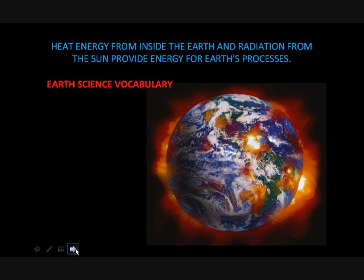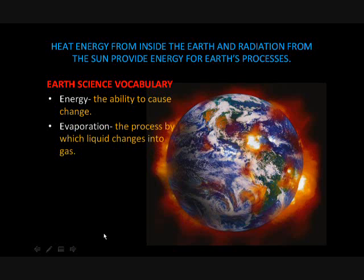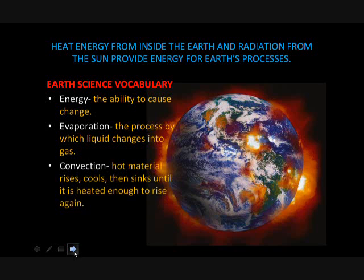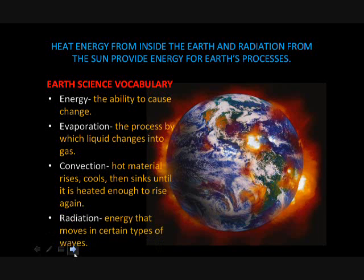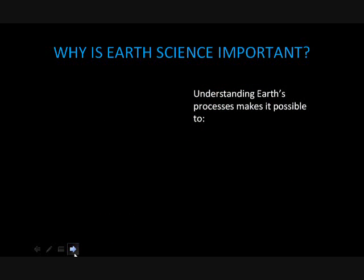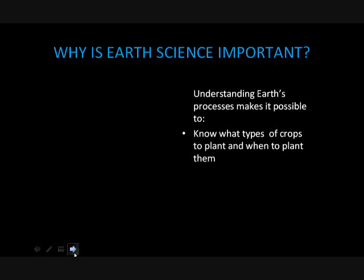Heat energy from inside the earth and radiation from the Sun provide energy for earth's processes. Earth science vocabulary: energy — the ability to cause change; evaporation — the process by which liquid changes into gas; convection — hot material rises, cools, then sinks until it is heated enough to rise again; radiation — energy that moves in certain types of waves.